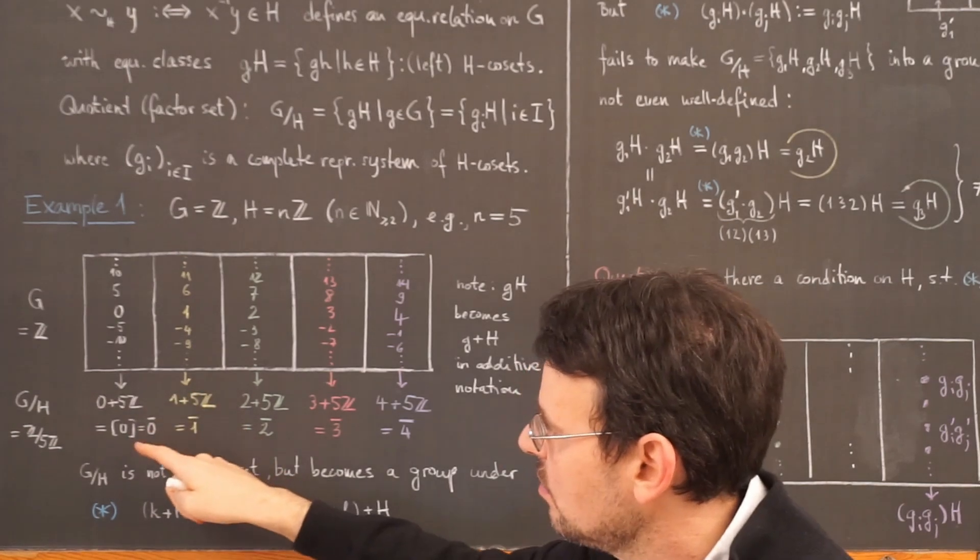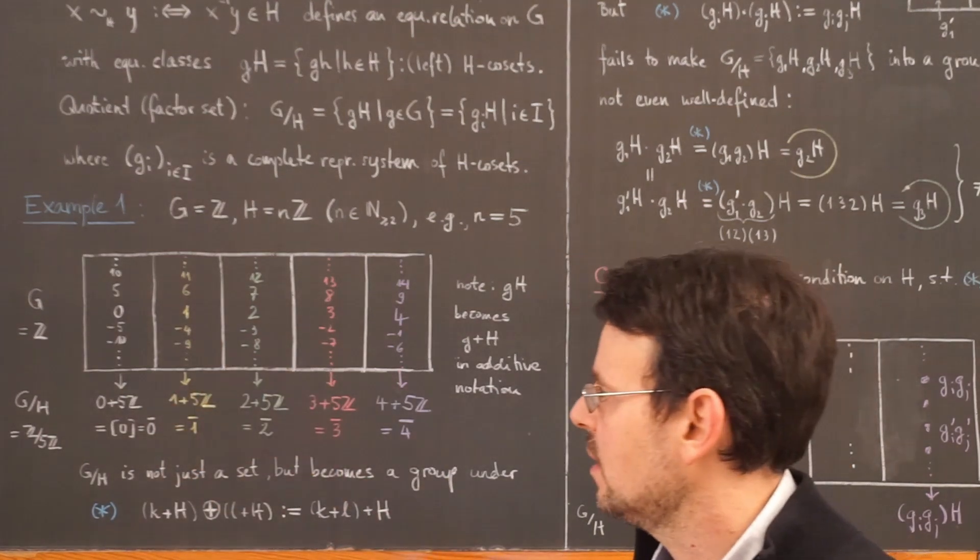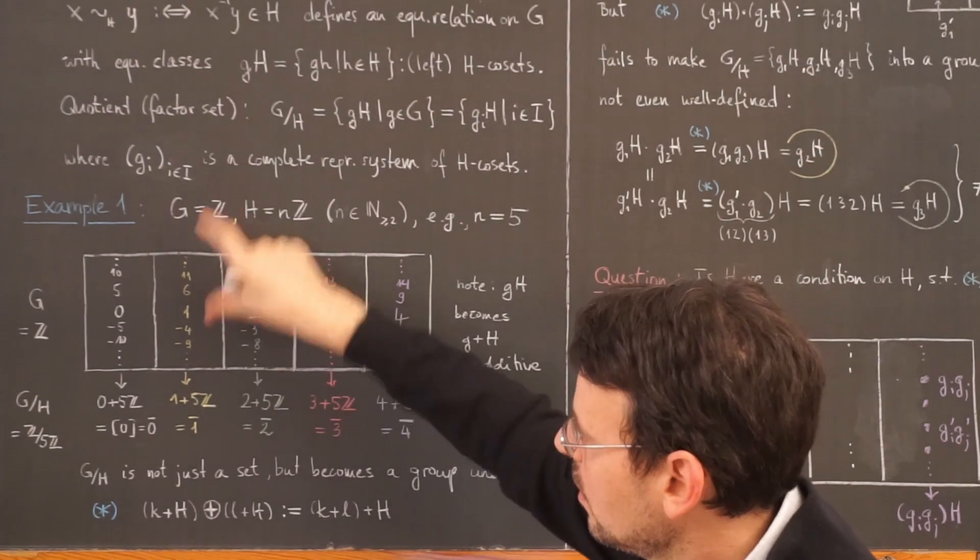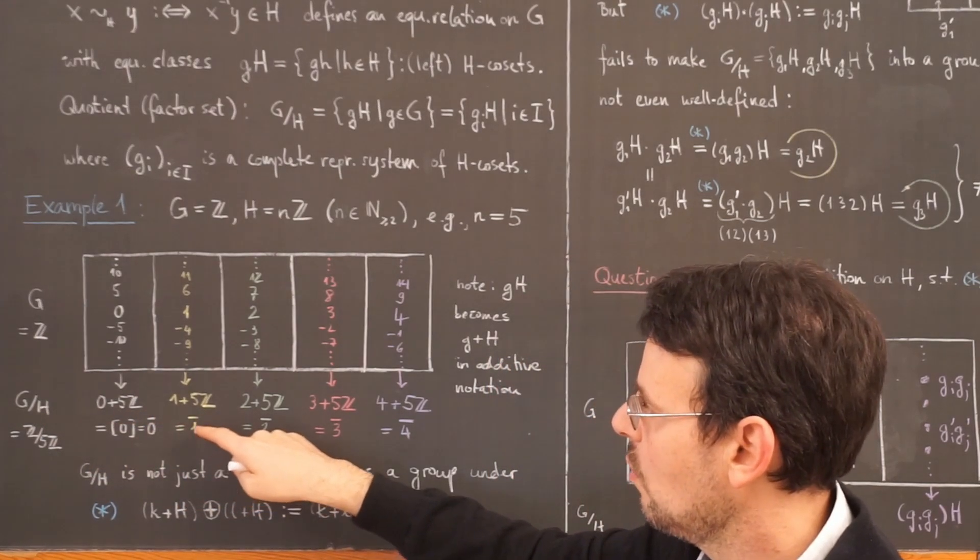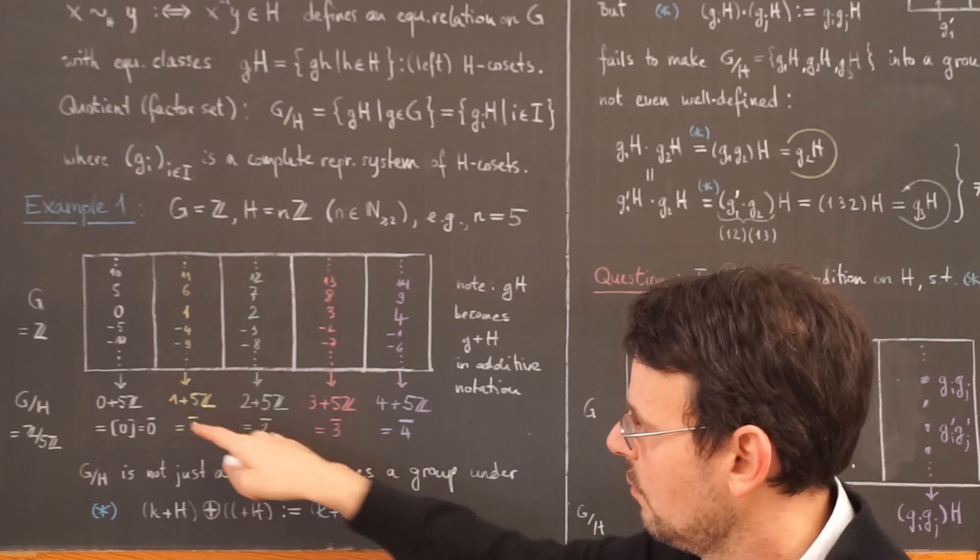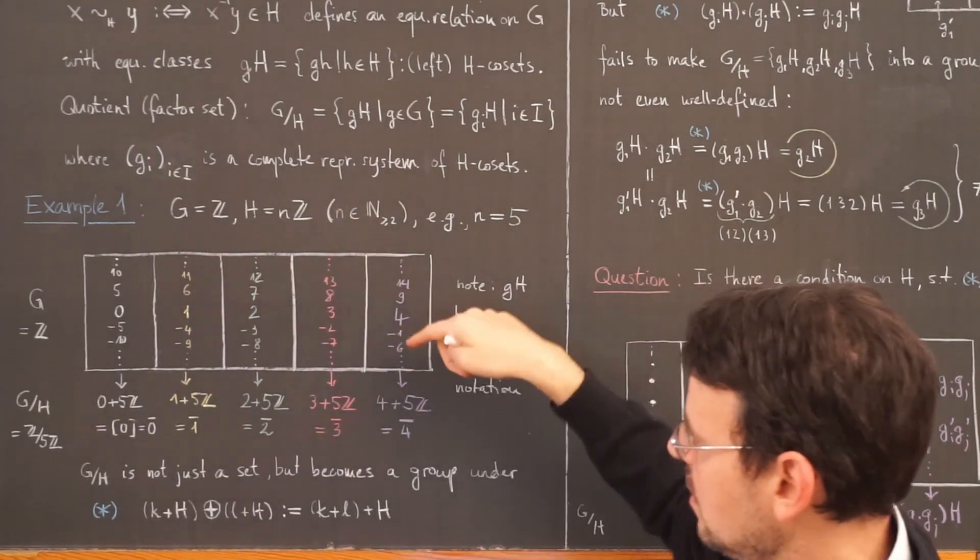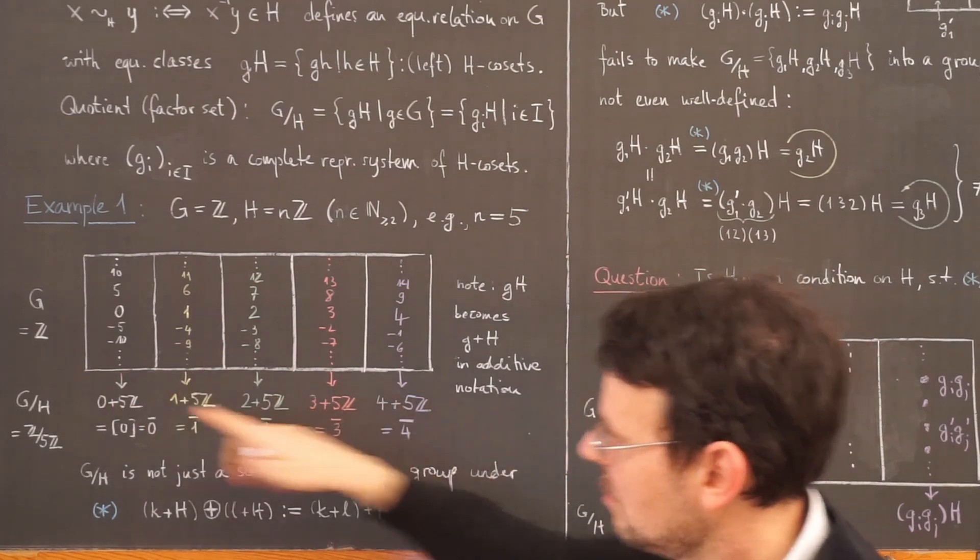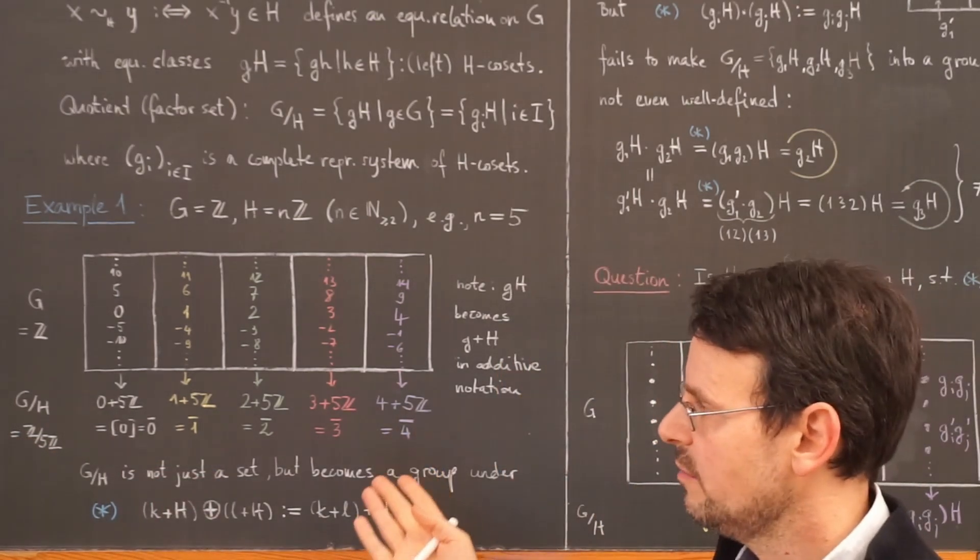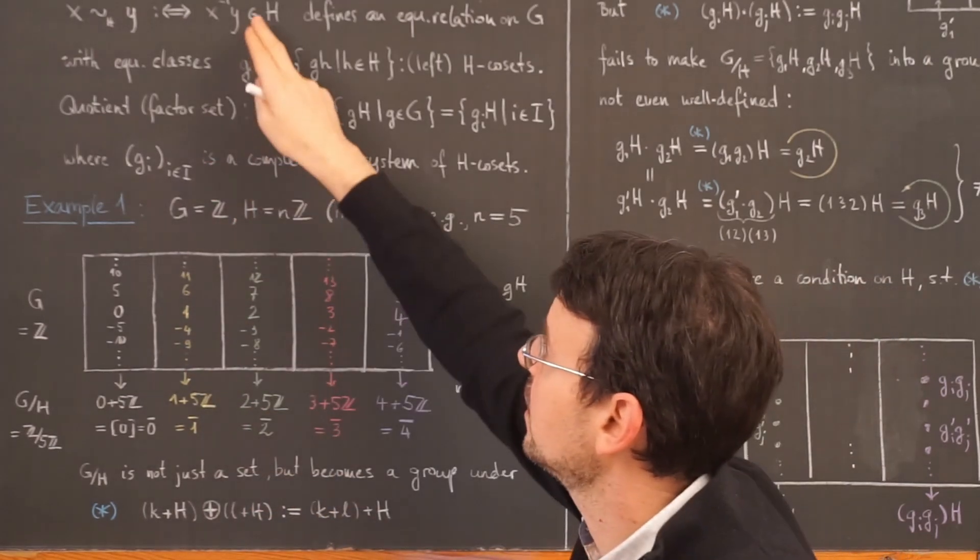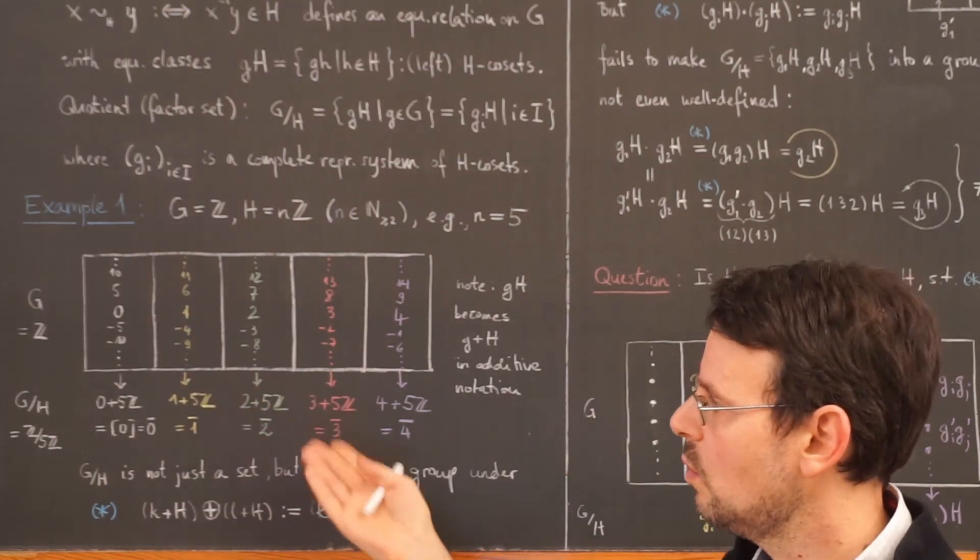And this here is simply the residue class of 0 and for ease of notation I write it as 0 bar as we have done many times before. This whole set gets collapsed to the next element of this quotient here, the residue class of 1 or the left coset of 1 with respect to the subgroup 5z and so on. So I end up by collapsing all these disjoint sets to new elements of this new set here, which is called g mod h or z mod 5z. And this can be done for any subgroup. Any subgroup affords an equivalence relation on a group by this definition. And for any subgroup I can build this new factor set or quotient set.